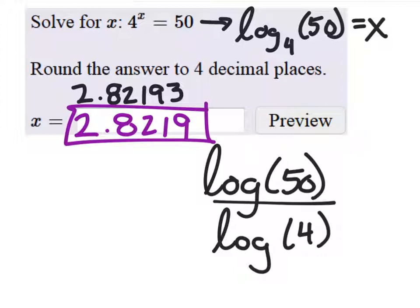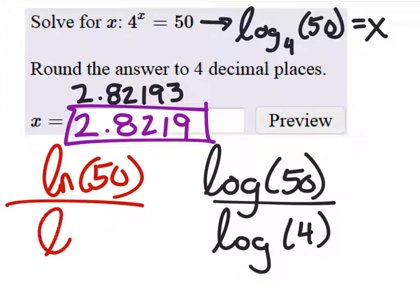So we changed it to common logs. If you wanted to, you could do natural logs as well, right? You could say I'm going to do the natural log of 50 divided by the natural log of 4, and you should get the same answer. And that's what this is: if we want to change the base, we can to whatever we want it to be.